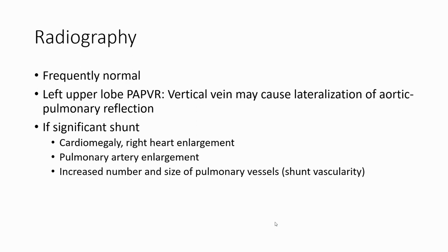Frequently normal on chest radiography. In left upper lobe PAPVR, the vertical vein may cause lateralization of the aortopulmonary window. If significant shunt, findings include cardiomegaly, right atrium enlargement, pulmonary artery enlargement, increased number and size of pulmonary vessels, and shunt vascularity.